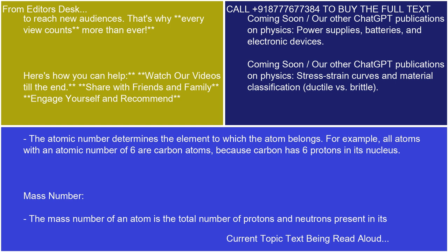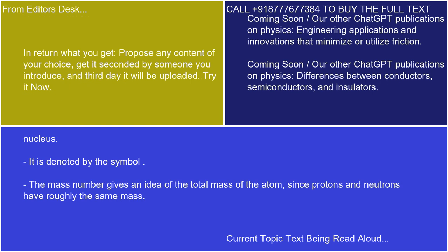Mass number: the mass number of an atom is the total number of protons and neutrons present in its nucleus. It is denoted by the symbol A. The mass number gives an idea of the total mass of the atom, since protons and neutrons have roughly the same mass.